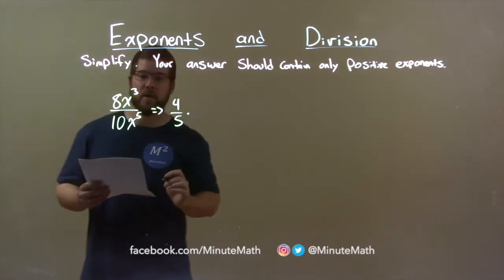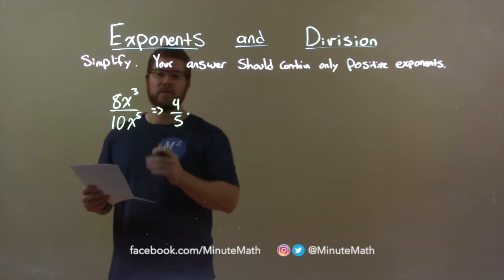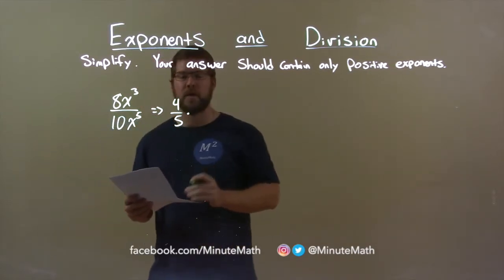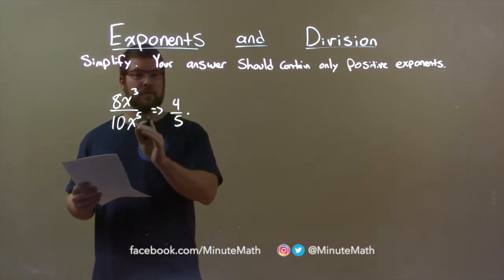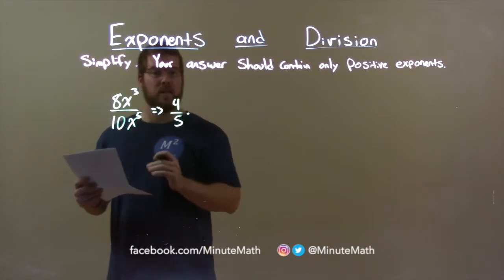Now, let's look at the variables. We have x to the third power divided by x to the fifth power. When we divide variables with the same base, we subtract the exponents.